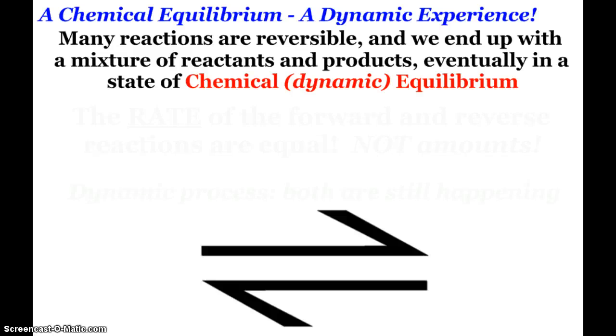We are venturing into the wonderful world of equilibrium, and we'll spend some time here this semester. But first up, we know that many reactions are reversible, meaning they can go forward and backwards, and so eventually we end up with a mixture of reactants and products that eventually end up in a state of chemical equilibrium, a dynamic equilibrium.